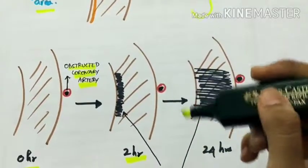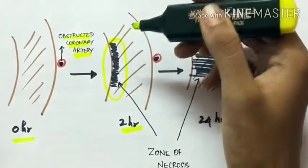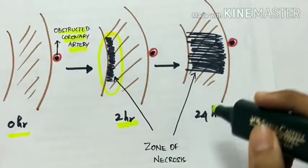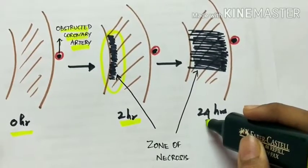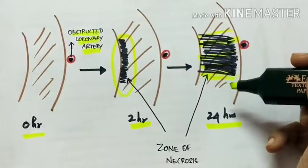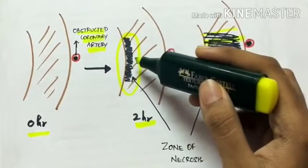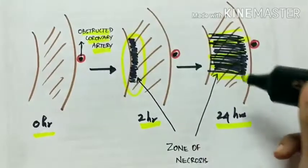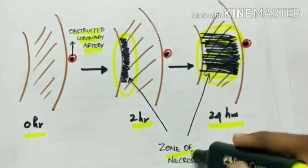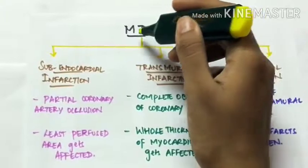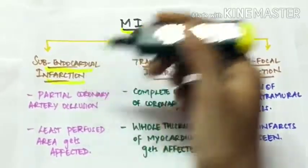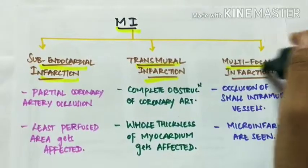After 2 hours, the zone of necrosis is the sub-endocardial region, as it is the least perfused area. When time progresses to 24 hours, the whole thickness of the myocardium undergoes necrosis. This is called sub-endocardial necrosis and this is transmural infarction. Myocardial infarction is divided into 3 types: sub-endocardial infarction, transmural infarction, and multifocal infarction.